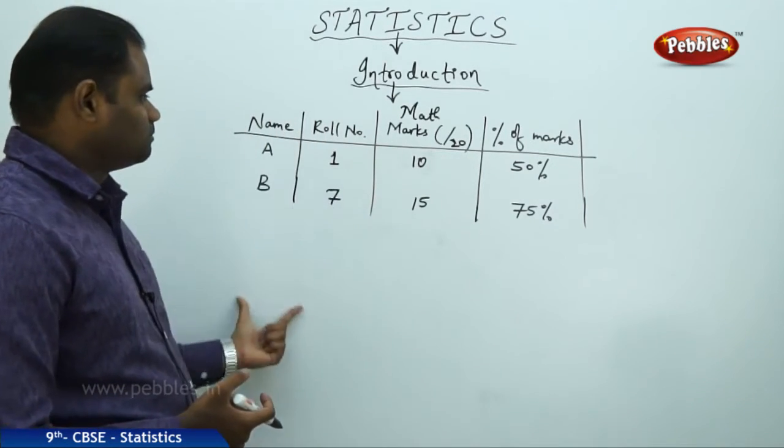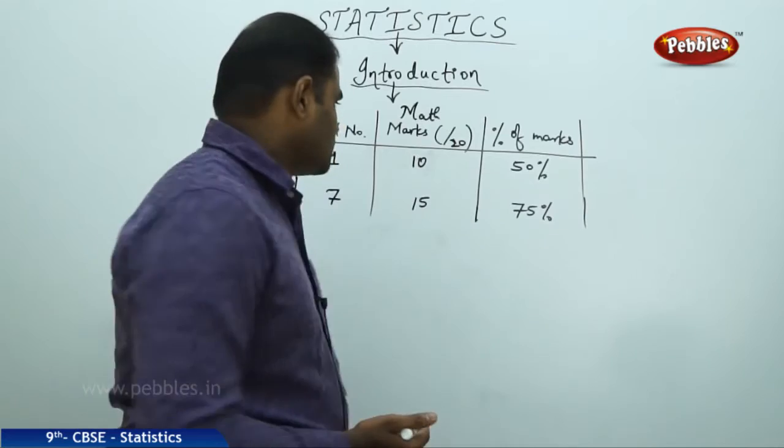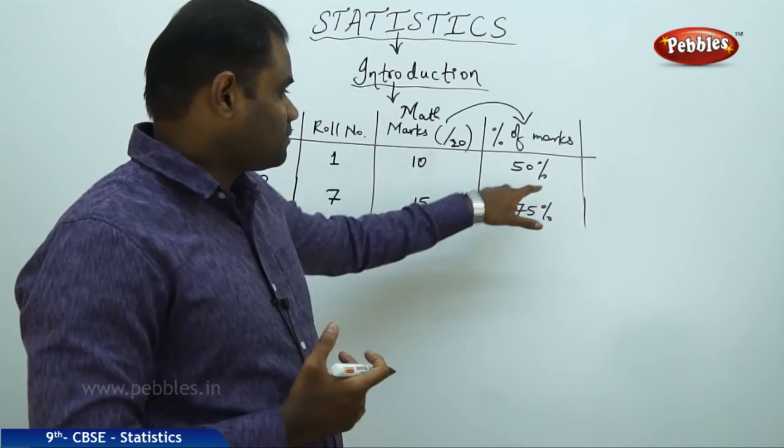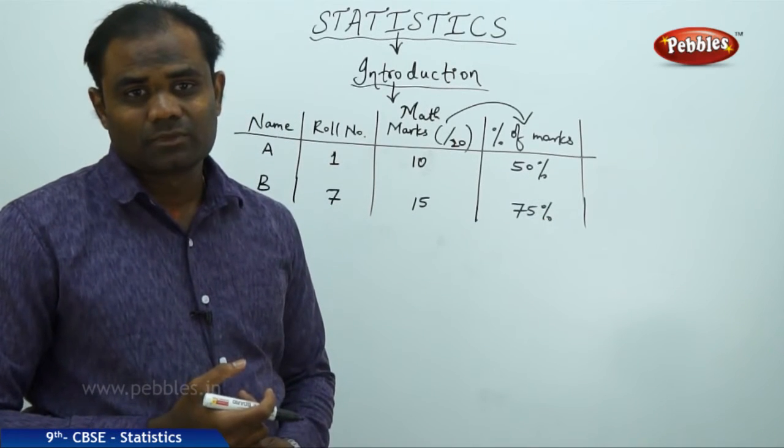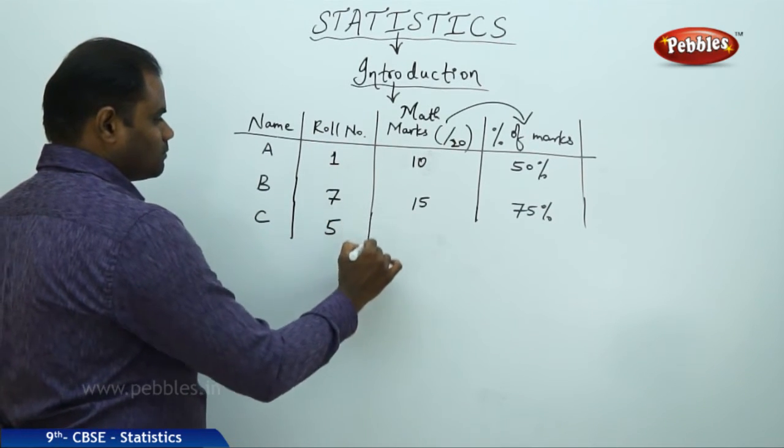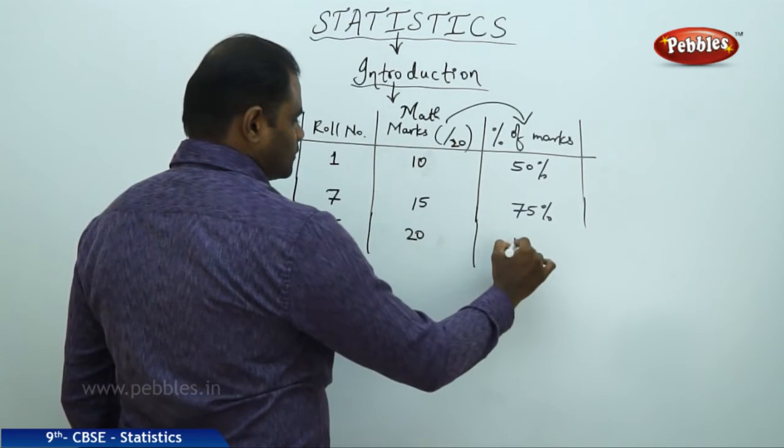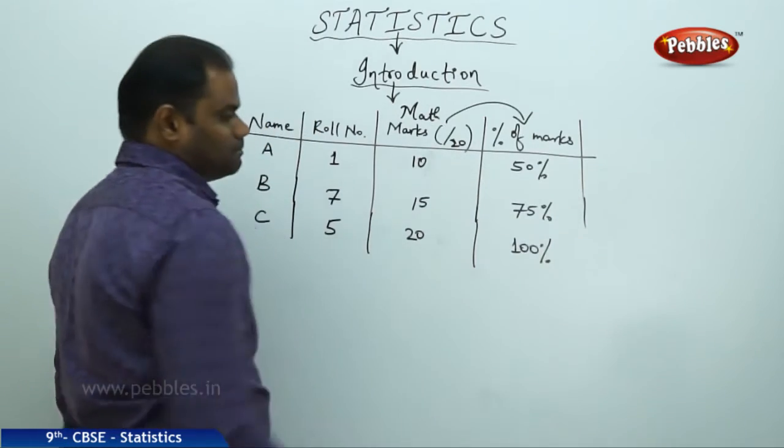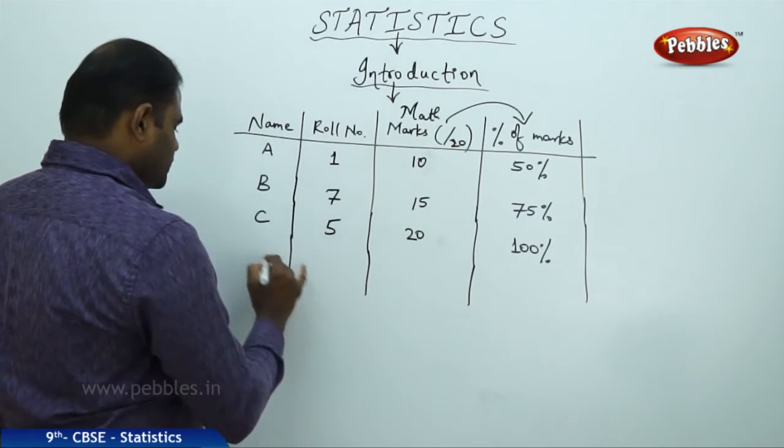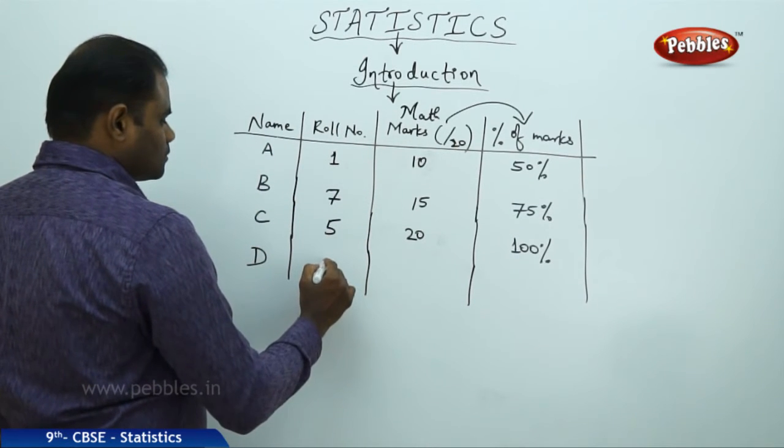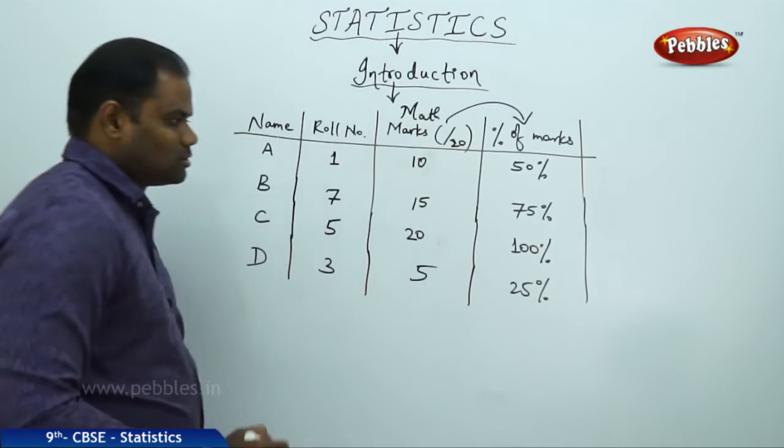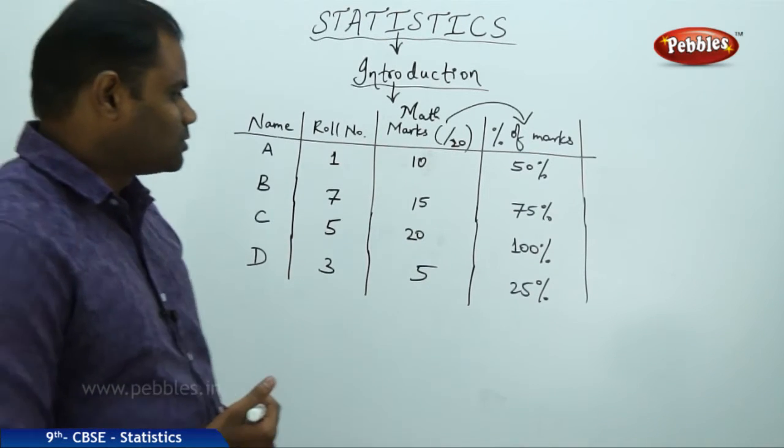The teacher is trying to collect the data of all the marks and analyze the marks obtained through the percentage. Then the student and teacher would realize where the student is standing. This gives me a clear picture. Say I take student C with roll number 5 who got 20 out of 20, which is 100%, and student D, roll number 3, with 5 marks.